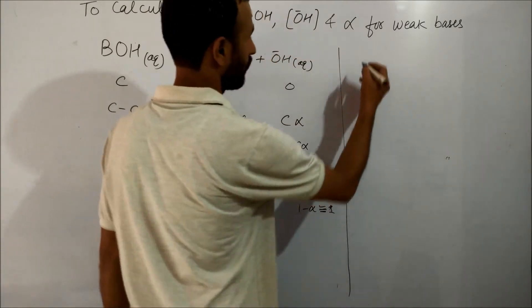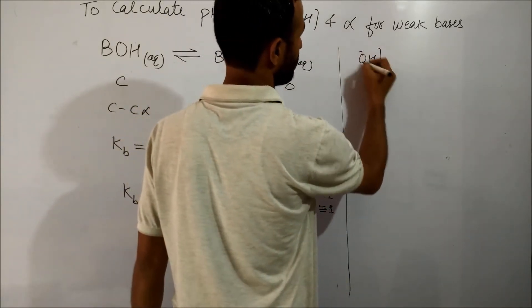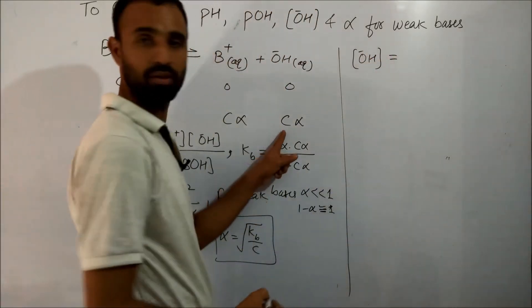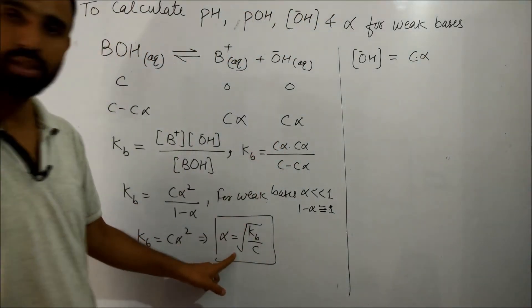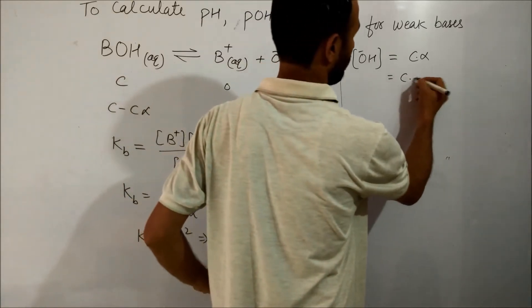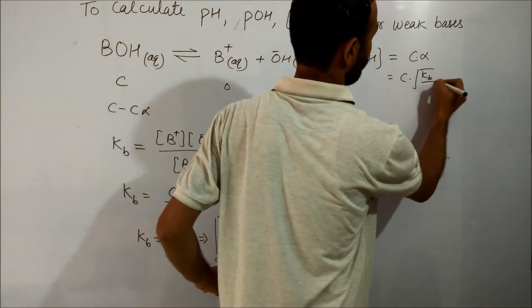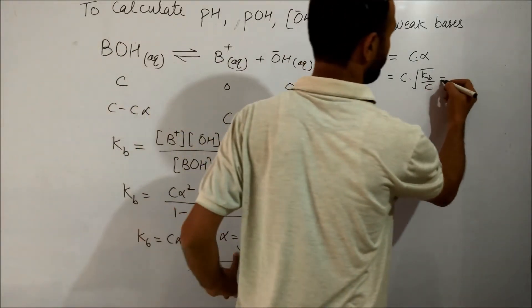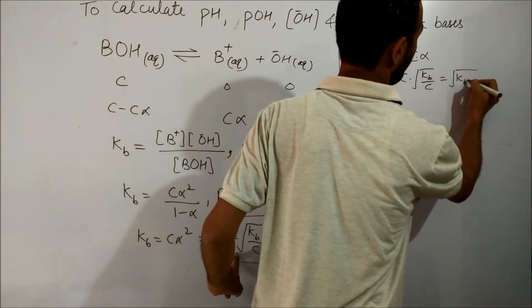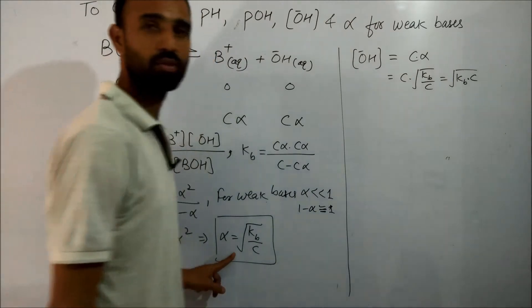So KB is equal to C alpha. And what is OH⁻ concentration? C alpha is equal to C alpha. C alpha is the square root of KB over C. It becomes the square root of KB times C.